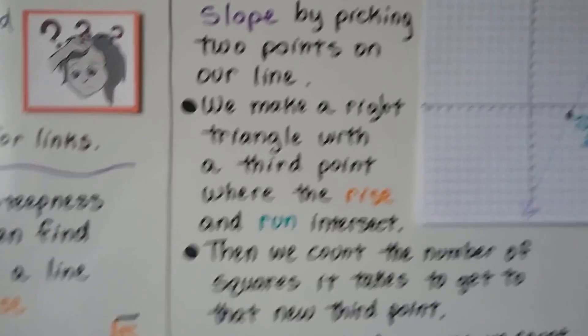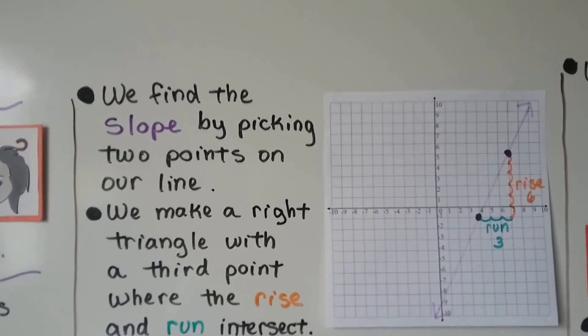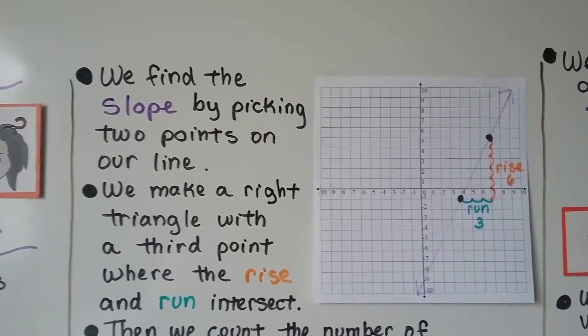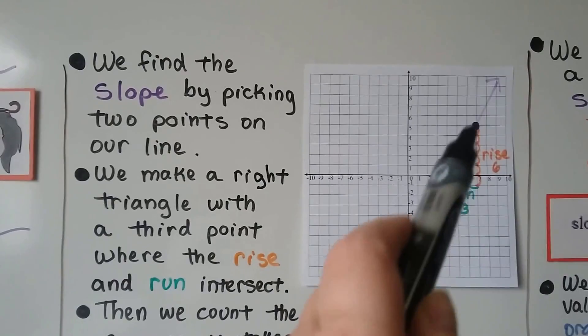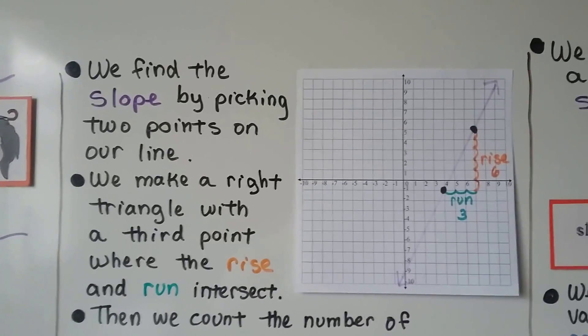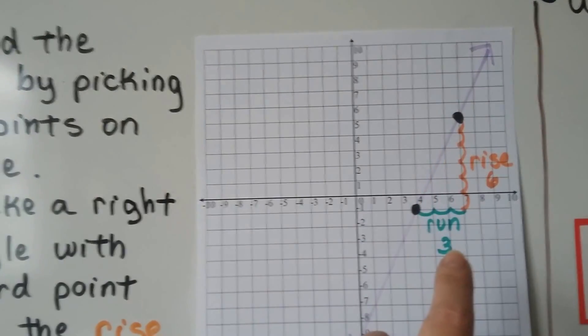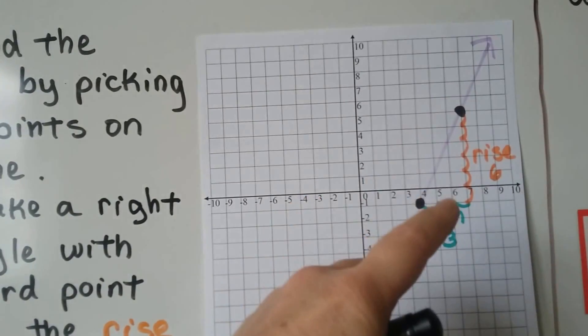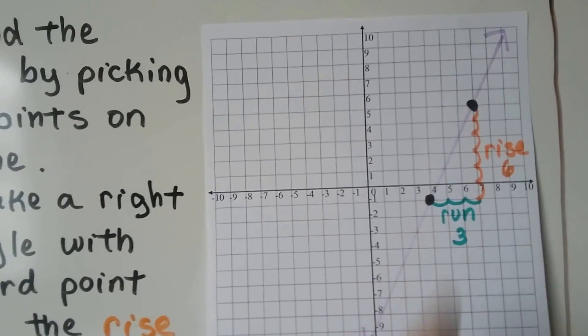So here's the first way I can show you. We find the slope by picking two points on our line. So if we're given a line and there aren't even points on it, we can pick points. We make a right triangle with a third point where the rise and the run intersect. This one has points on the line, so we can make our right triangle here, and we can do the rise and the run and count them. There's six squares for the rise and three for the run. So we're going to do six divided by three.